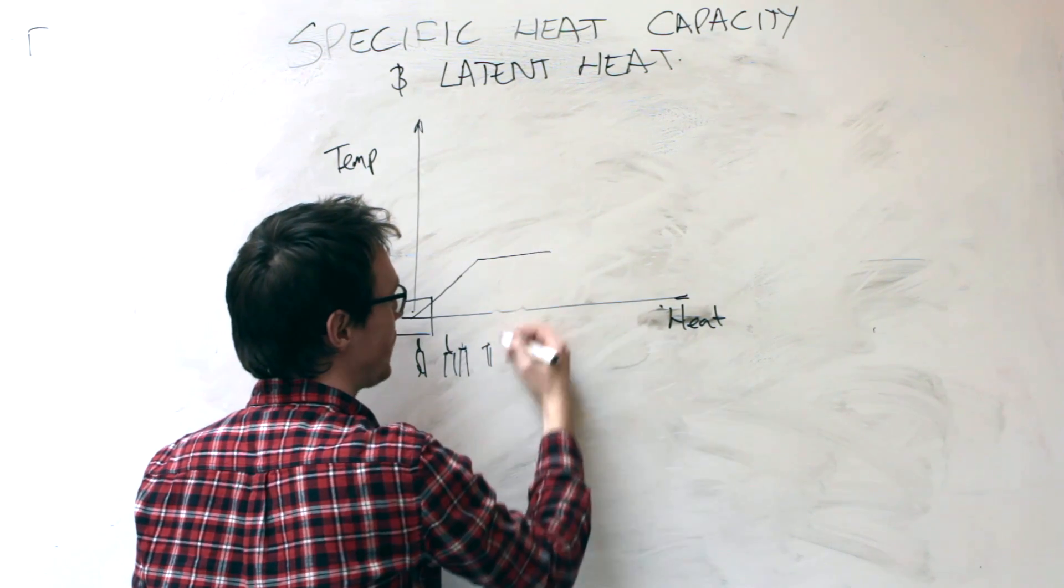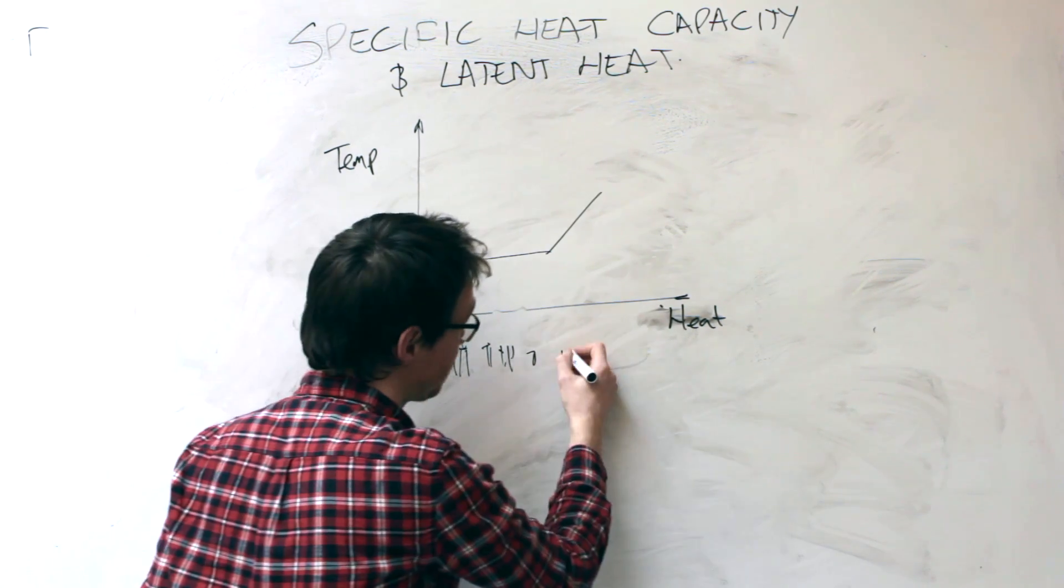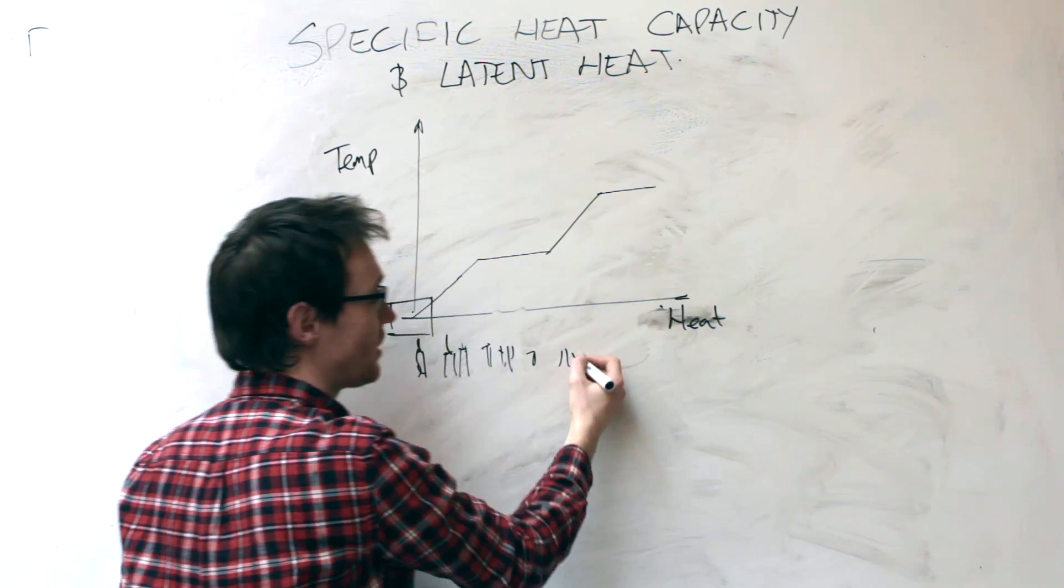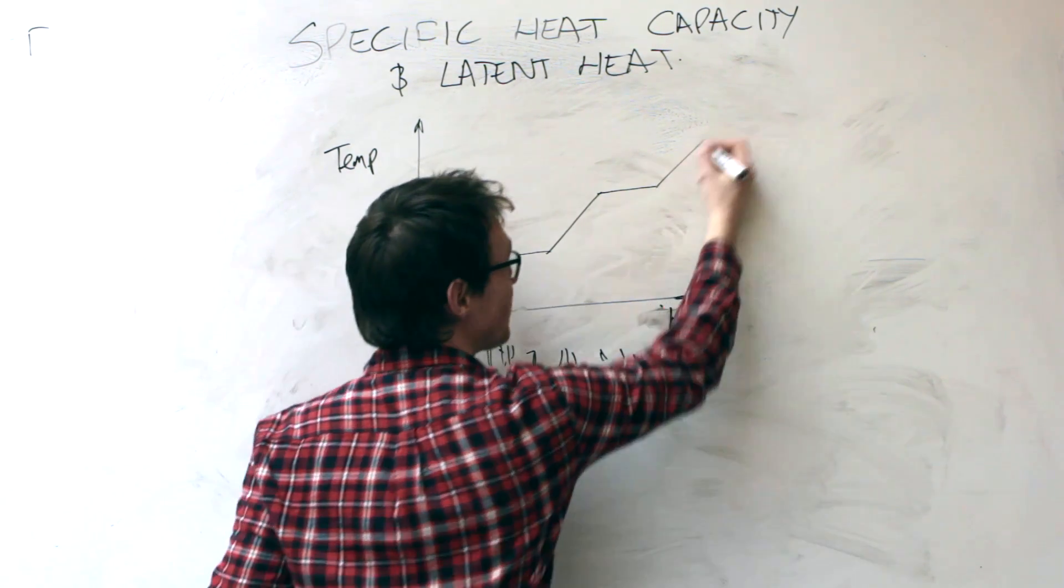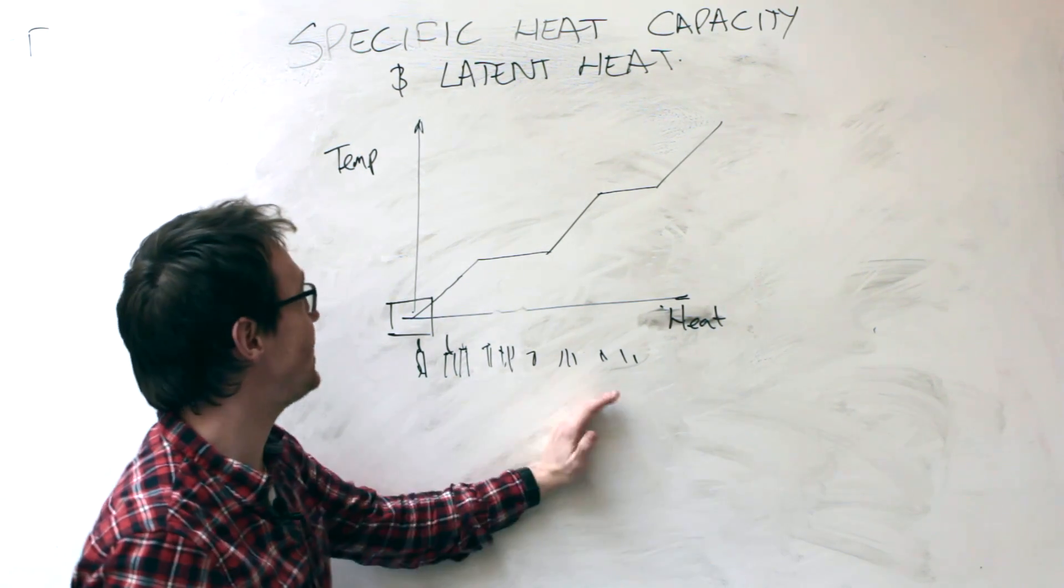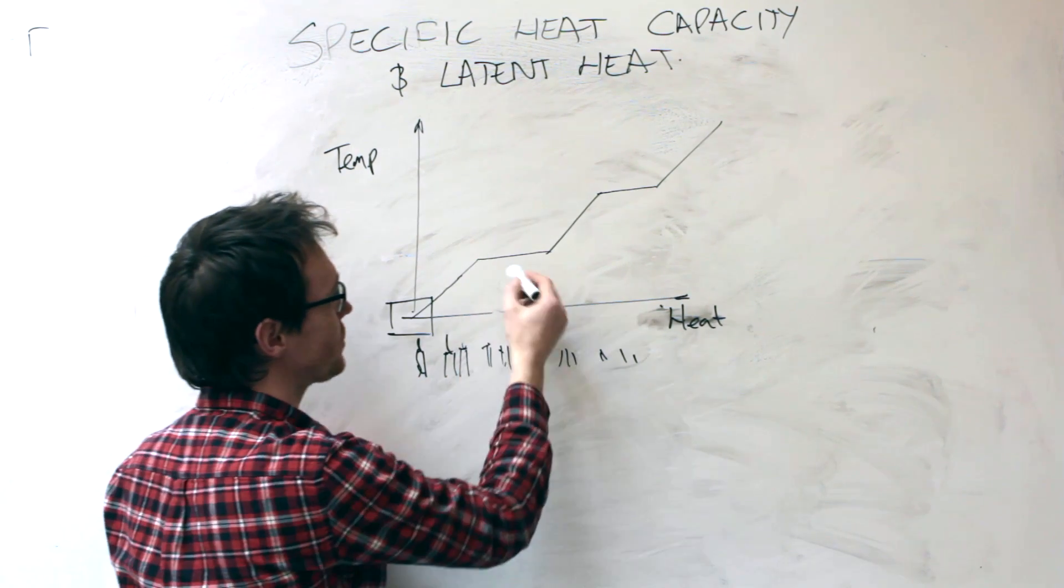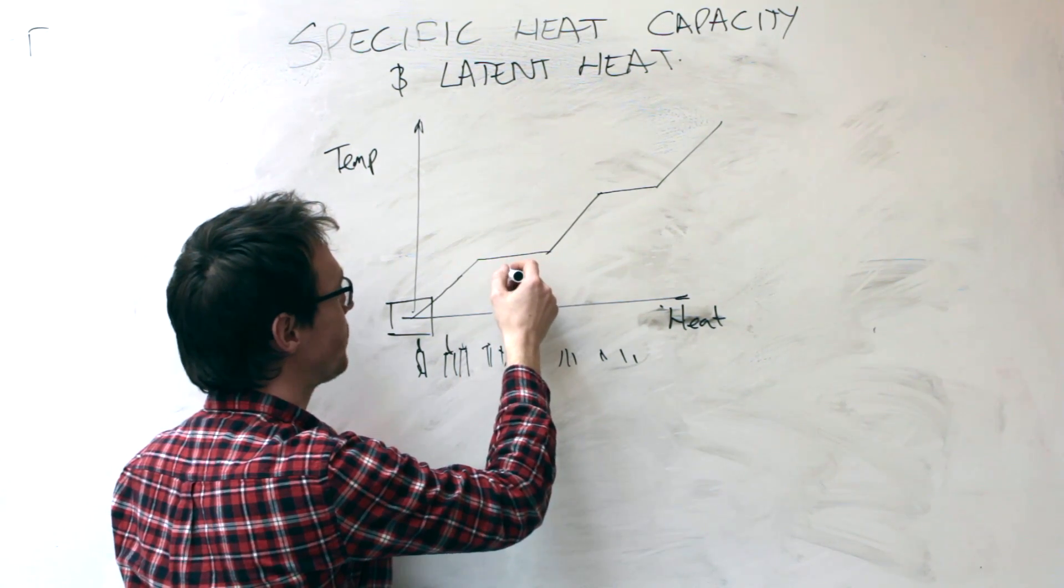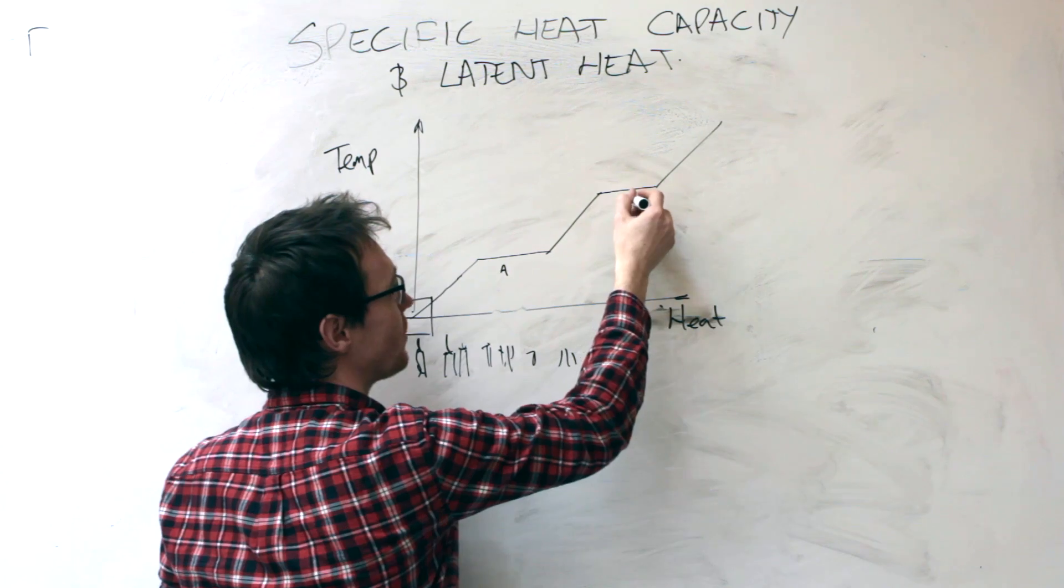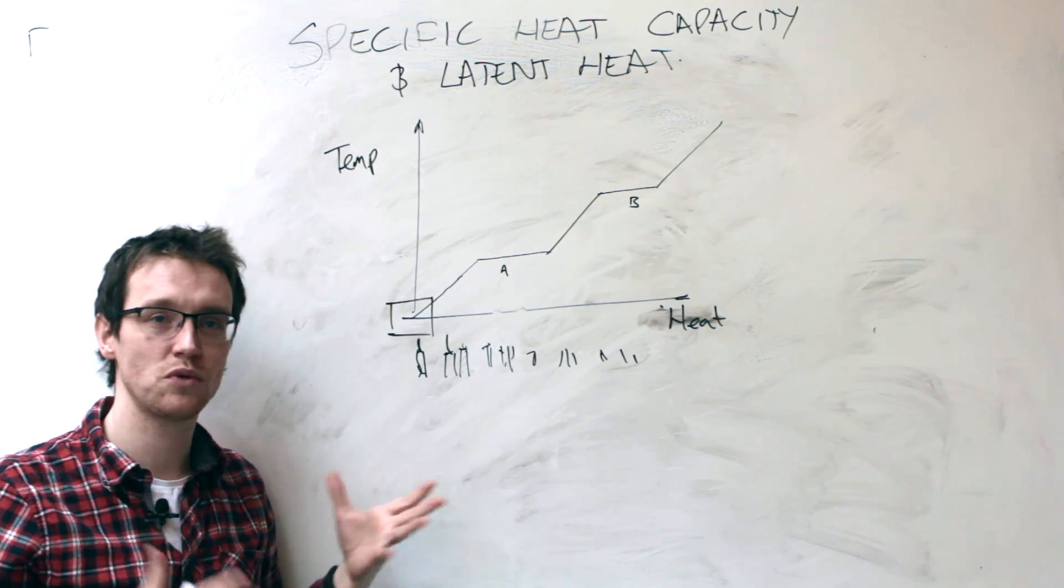And it flat lines for a bit, more candles then it increases, add more candles, flat lines for a bit, add more candles then it increases. So what on earth is going on there? We're adding heat, we're gaining an overall temperature rise, but at certain points - let's label them here A and B - where there is no temperature rise.